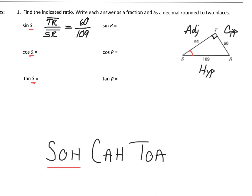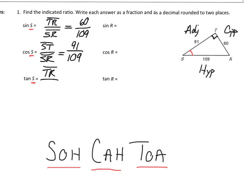For cosine of S, remember cosine is adjacent first over the hypotenuse. My adjacent side is ST and my hypotenuse is still SR. So ST is 91 over 109. And lastly for tangent, that ratio is opposite over adjacent. The side opposite is TR and the adjacent was ST. So TR is 60 over ST is 91. So I've completed my first three ratios in reference to angle S.